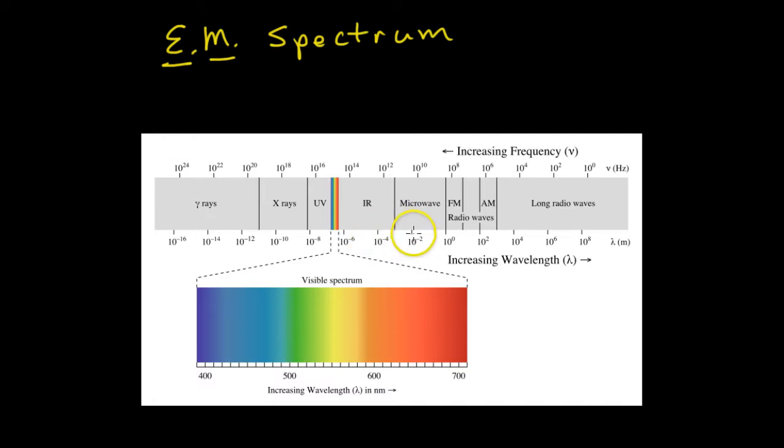the electromagnetic spectrum, this is all the different types of electromagnetic waves: radio waves, long radio waves, regular radio waves, microwaves, infrared. Here is visible light. And if you notice, the amount of space